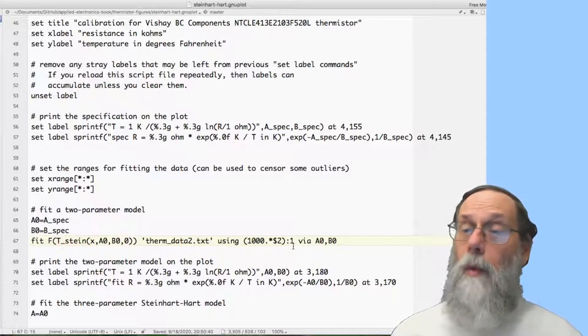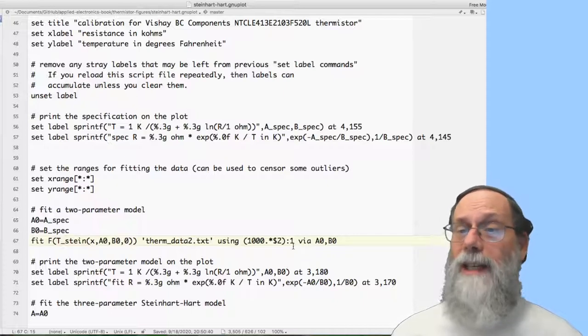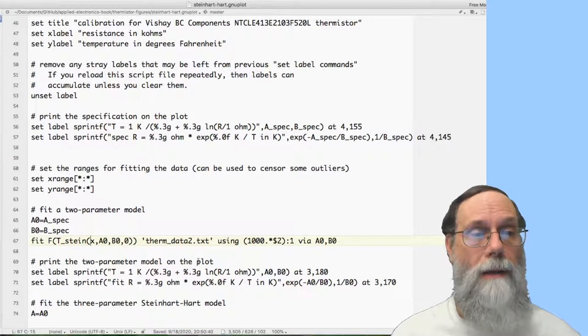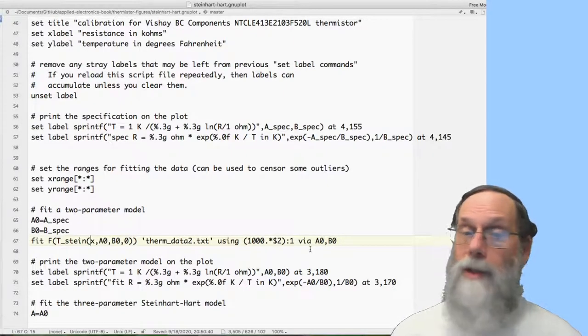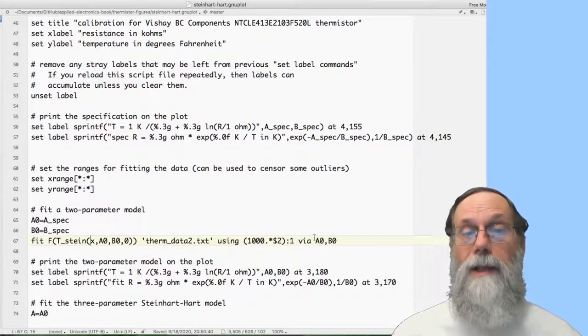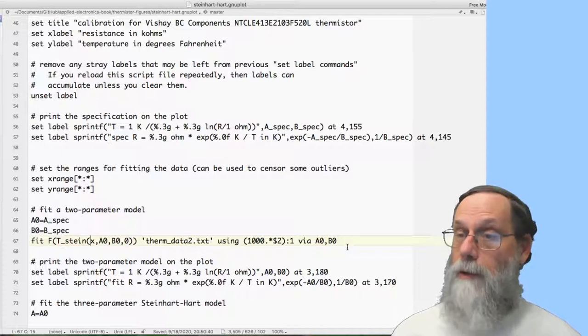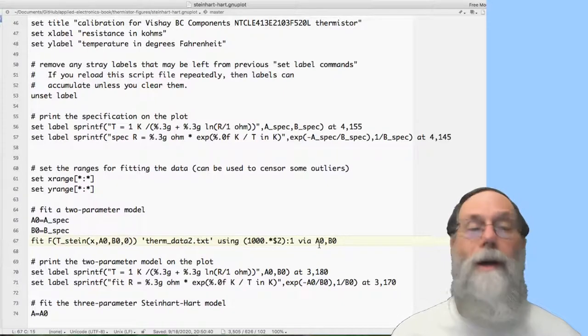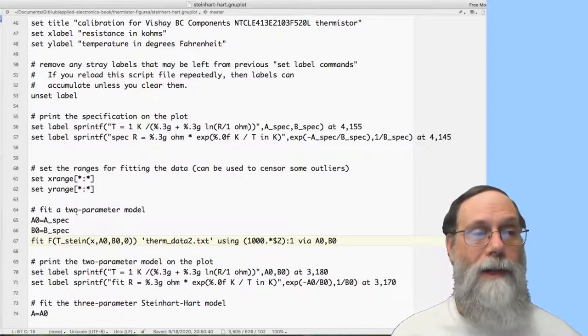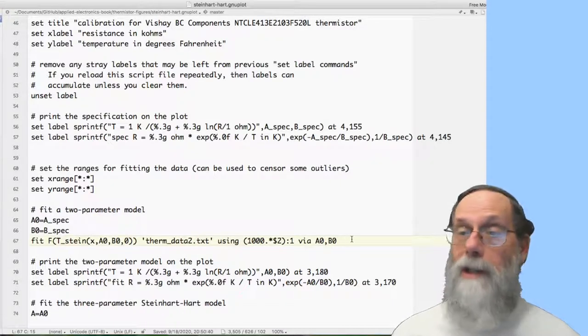Then I need to say, what am I changing here? I'm fitting this model to this data, and this is how to interpret the file as data. But what are the parameters I'm adjusting? And the via here says a0 and b0 are the things you're allowed to adjust. So that tells the program, you've got initial values for a0 and b0. Try adjusting them to get a better fit for this data.